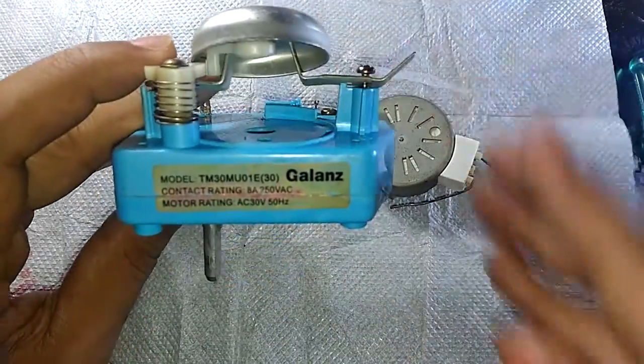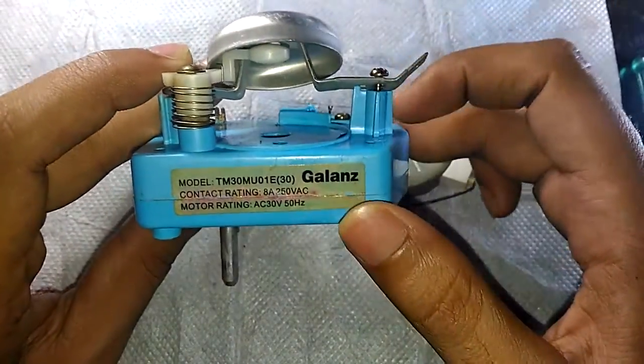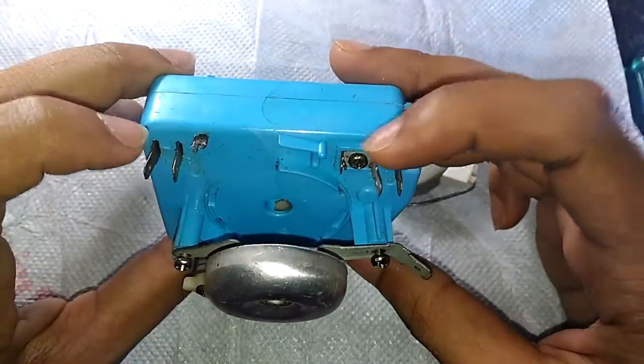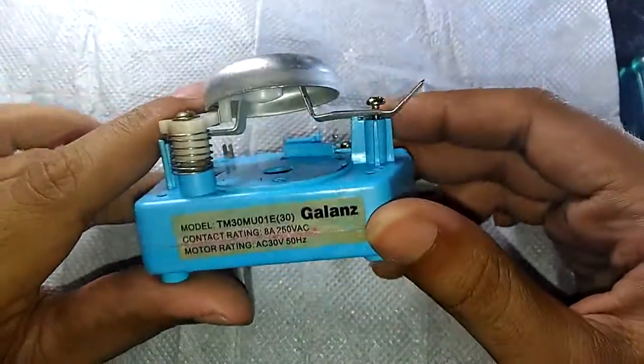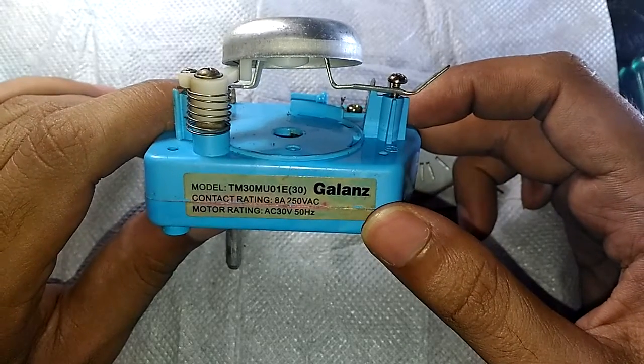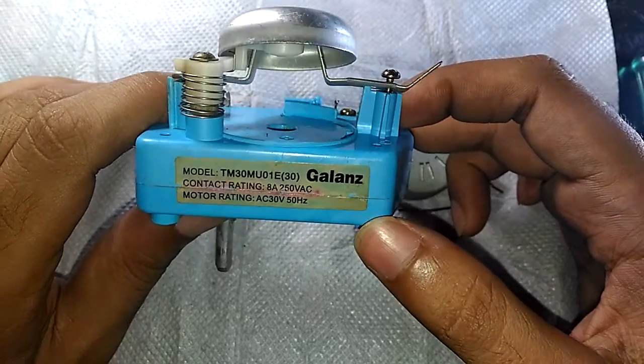So let's take a look at the ratings. The contacts, which are these connections right here, are rated for around 8 amps at 250 volts AC.